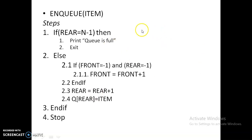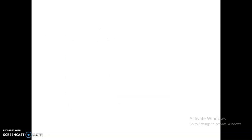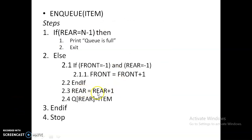Rear goes to position one, and 7 is placed there. You continue enqueuing items until rear equals N minus one, at which point the queue is full. In this way you enqueue items one by one into the queue.